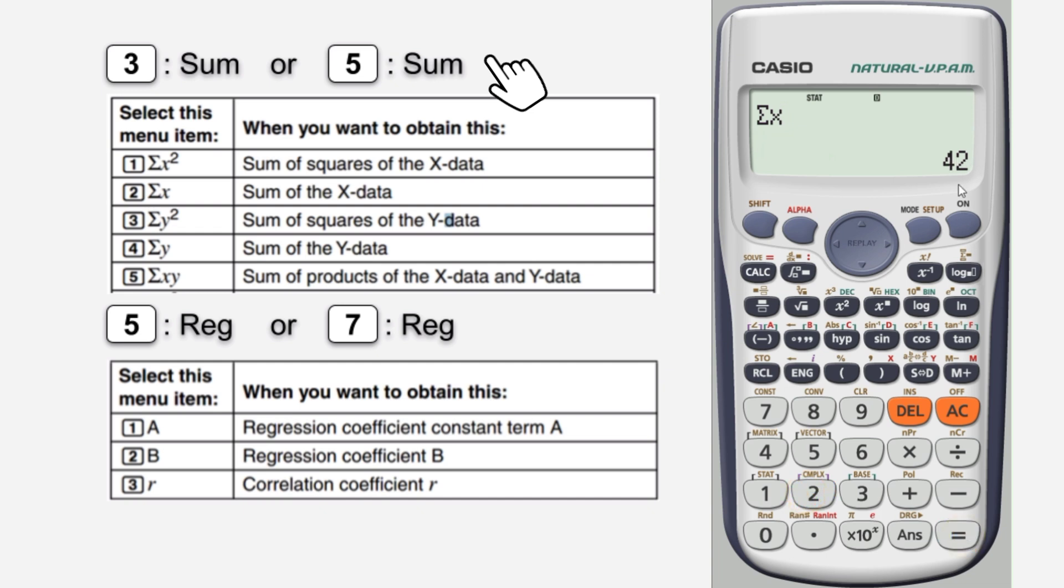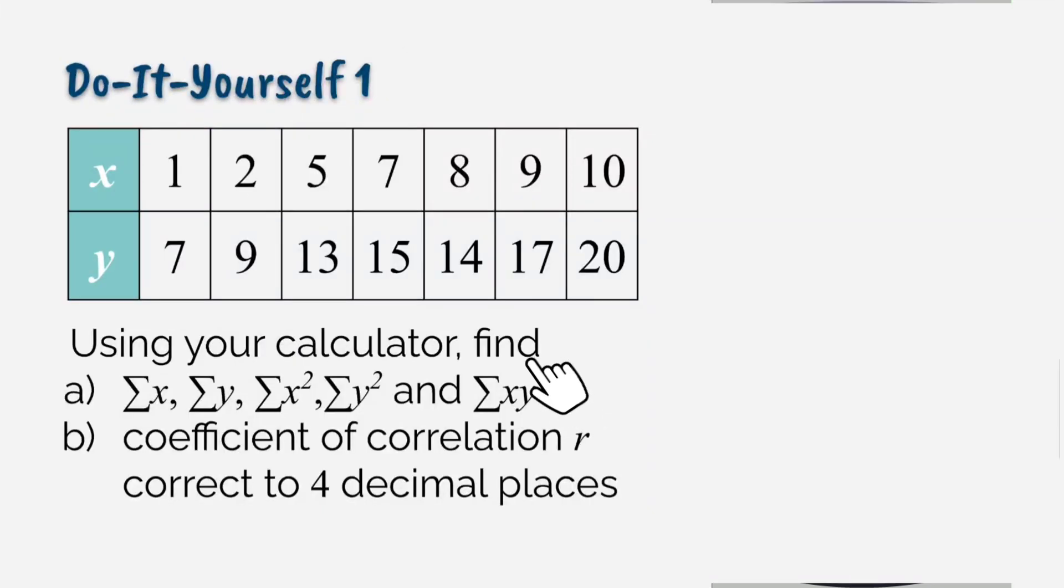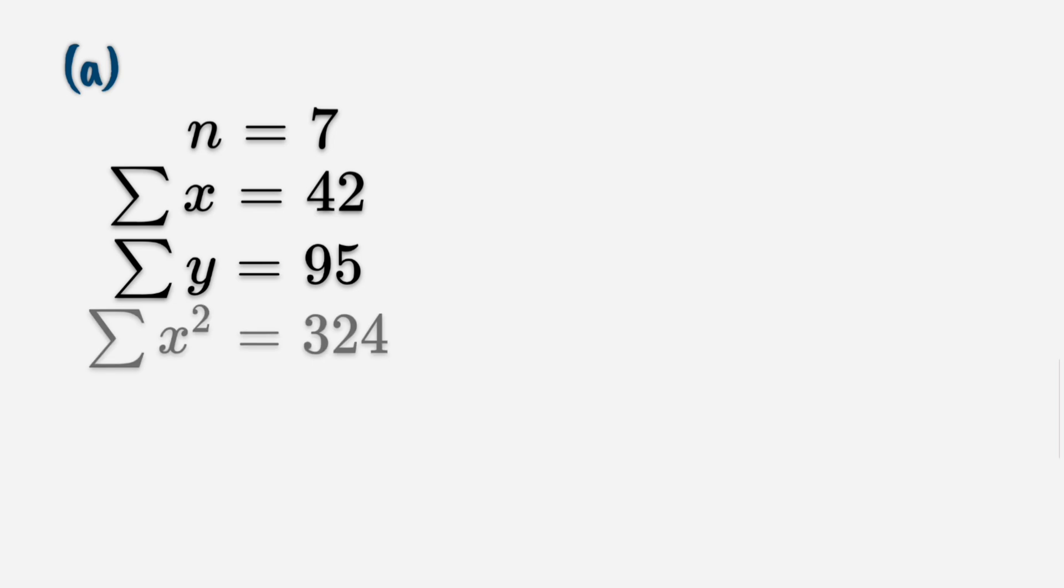Press equals and the value is 42. By using your calculator, let's answer the question. For n equals 7, summation X equals 42, summation Y equals 95, summation of X squared equals 324.